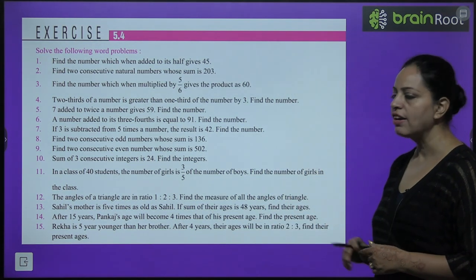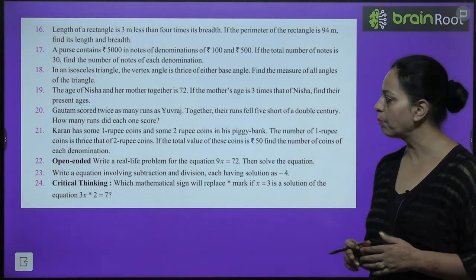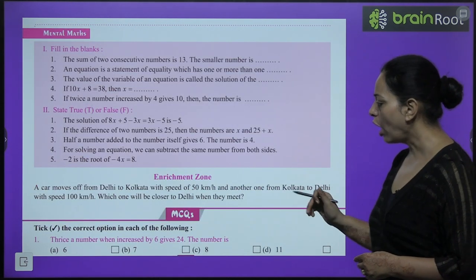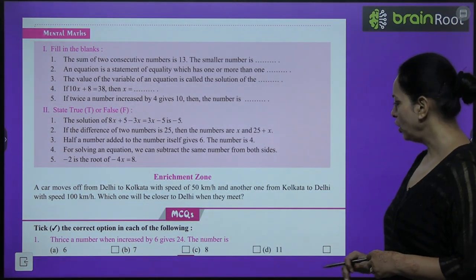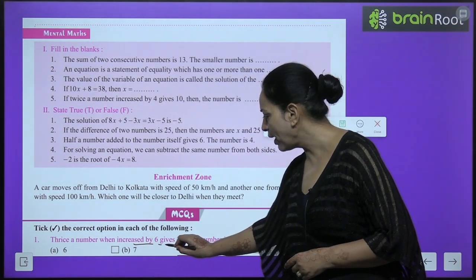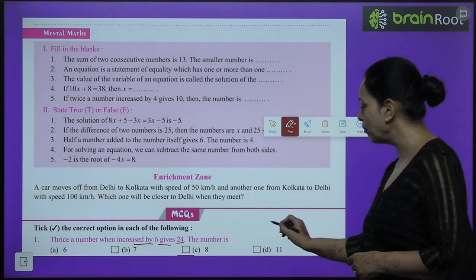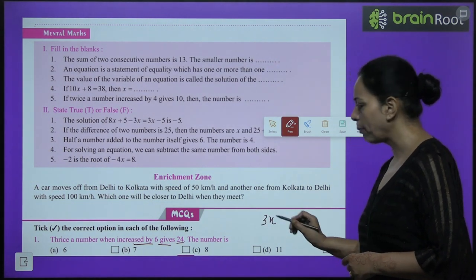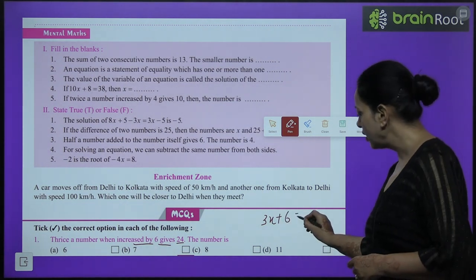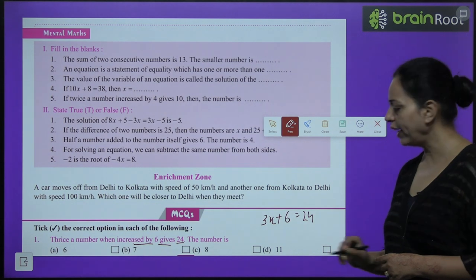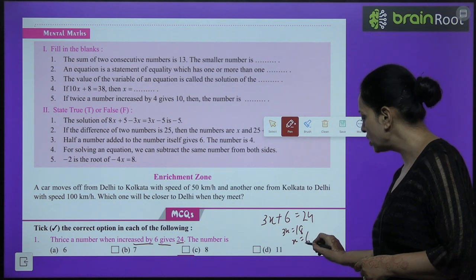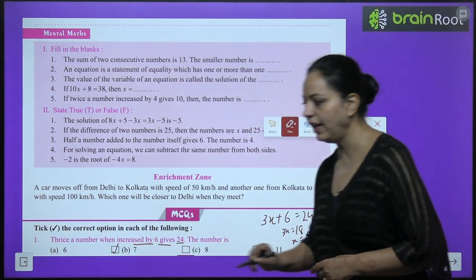Exercise 5.4 questions are based on these examples. Now some MCQs — take the correct option. First: '3 times a number increased by 6 gives 24.' Let number be x: 3x plus 6 equals 24, so 3x equals 18, x equals 6. Answer is A.